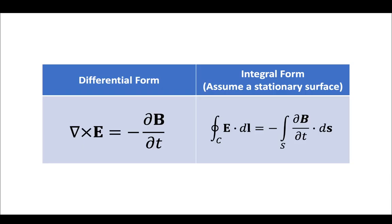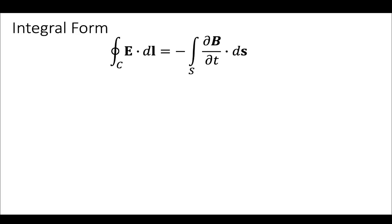First, I want to provide a little bit of an introduction. So we have Faraday's Law. We have a differential form on the left and an integral form on the right. On the right, we will assume that we have a stationary surface that a magnetic field is passing through. So that surface is not moving. The integral form is what we are going to primarily deal with.